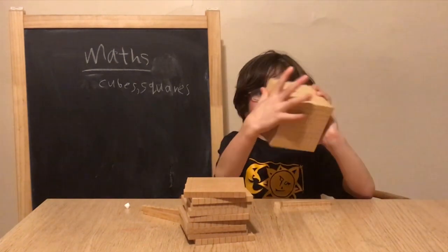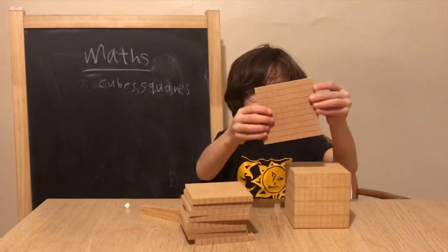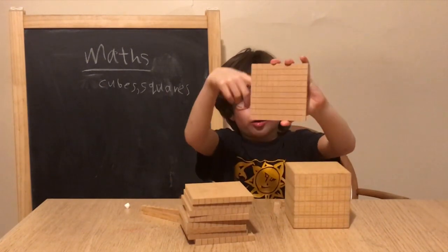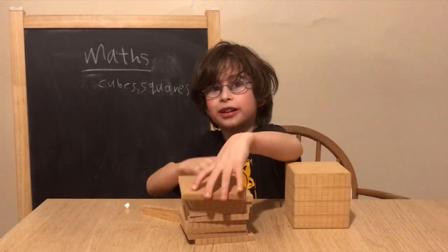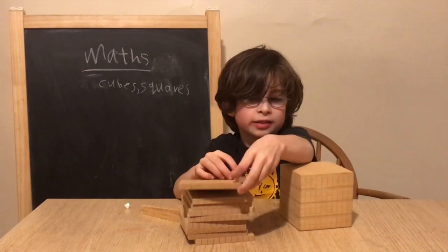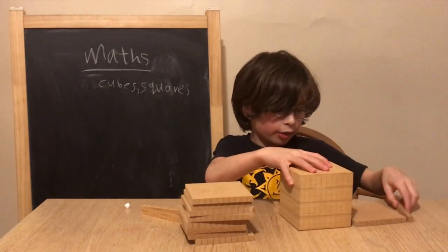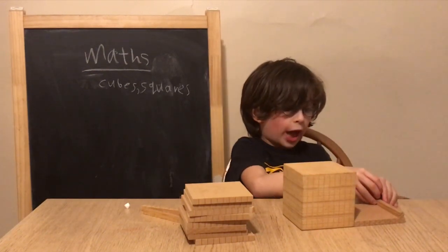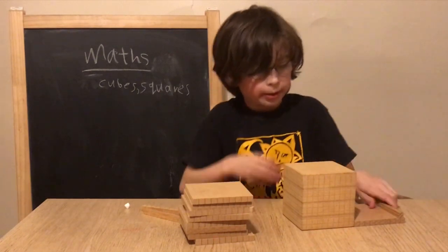As you can see it's a thousand block — you might want to get one. This is a 1 by 10 flat square, and a hundred of these little cuties. This is a tenth of this, the same as this is a tenth of that, and this is a tenth of that. So they're all divided by 10.